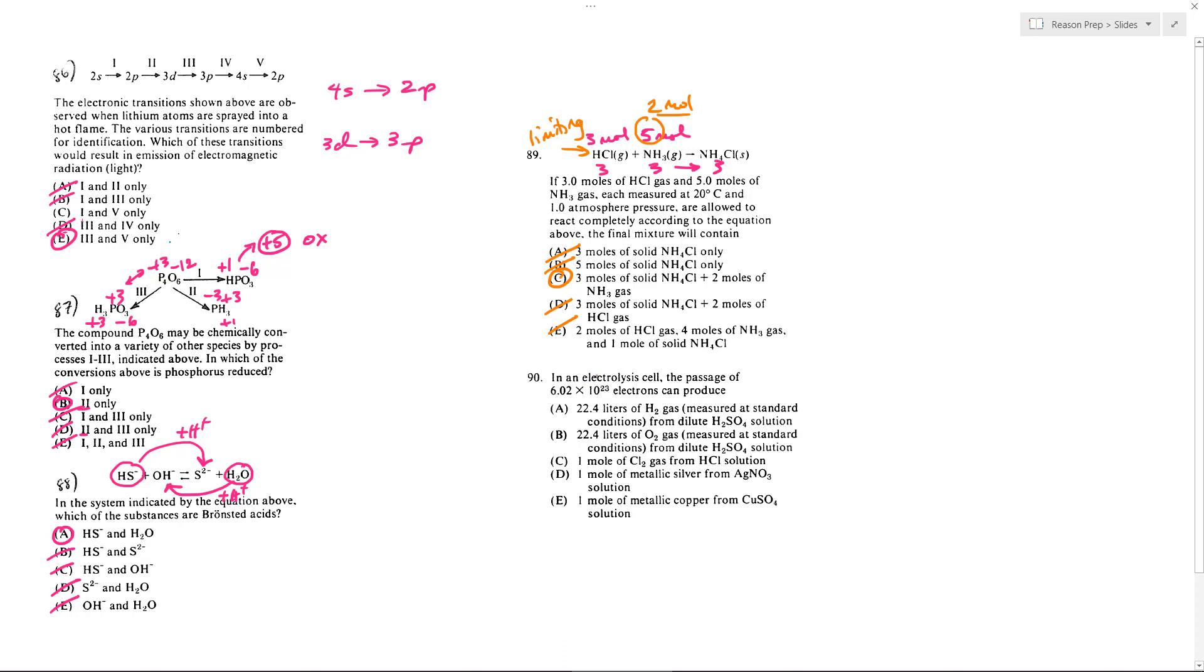And finally, in 90, what happens in electrolysis when we are passing 6.02 times 10 to the 23 electrons? Don't worry so much about the electrolysis. In this case, worry about the stoichiometry of this. This is 1 mole of electrons, 6.02 times 10 to the 23rd. So we want to know which of these compounds are we reacting with 1 mole of electrons.